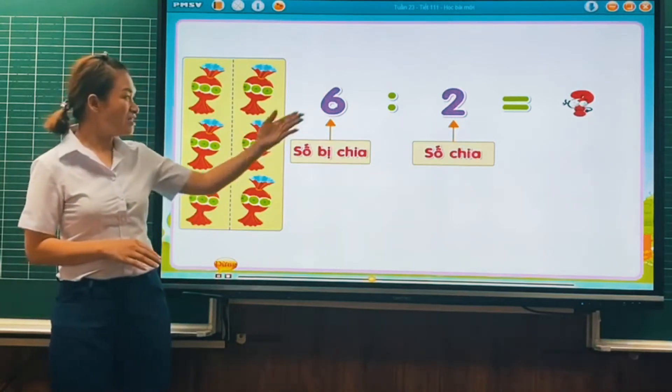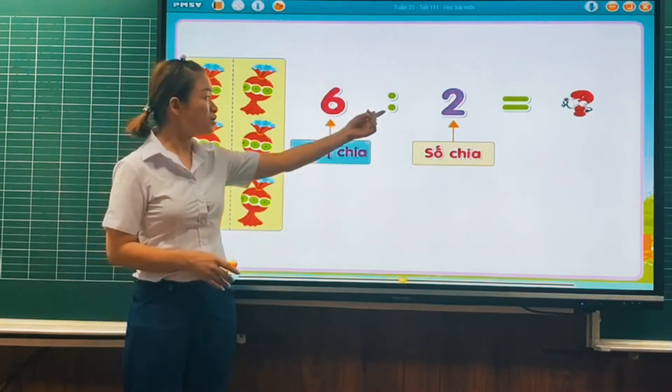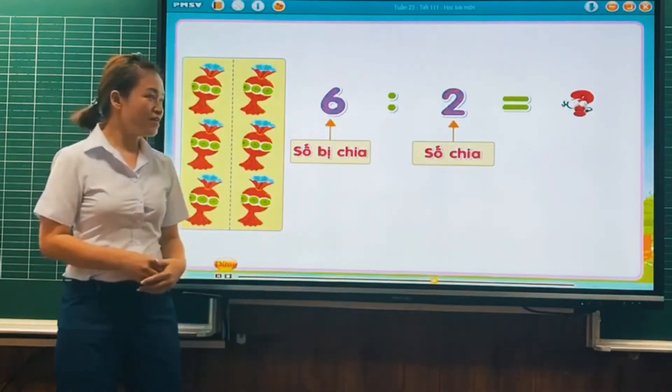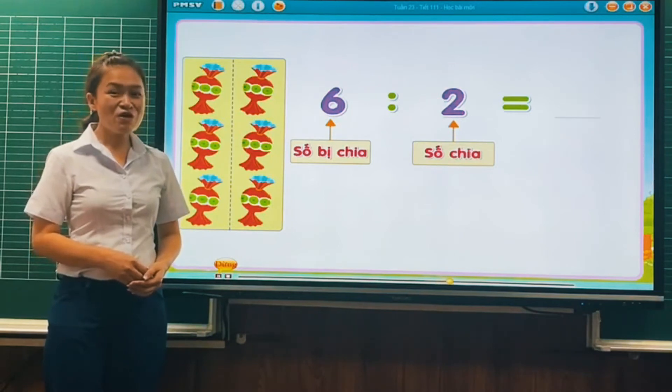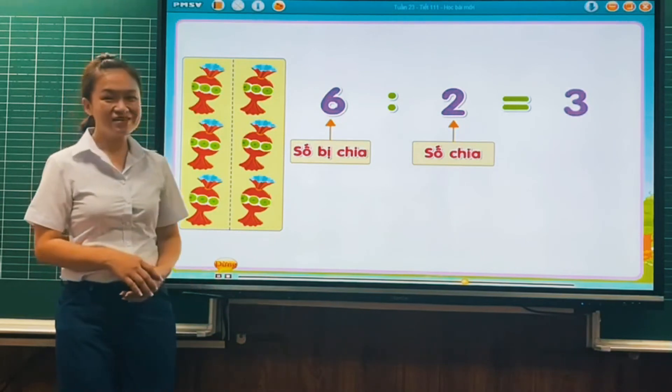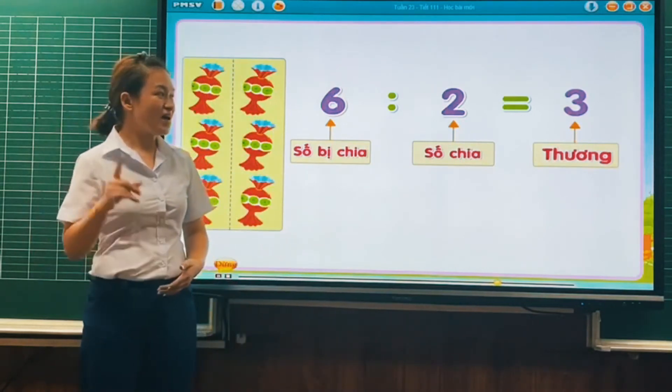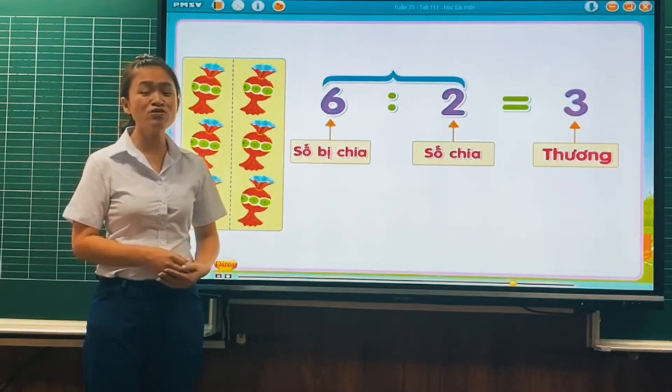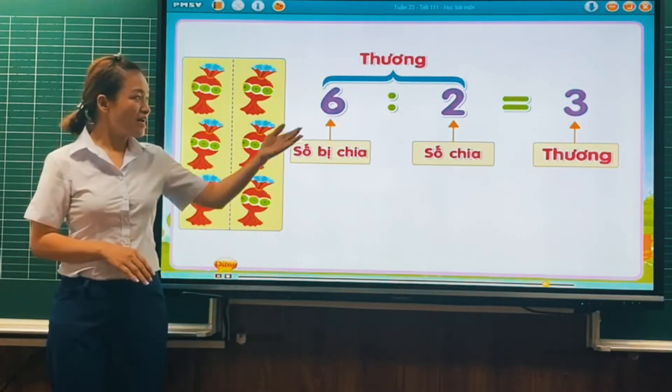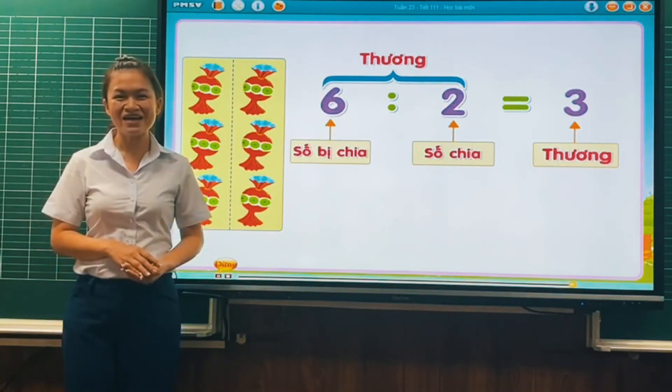What is this result called? The result of this calculation is called thương. Note that the result of 6 chia 2 is also called thương. Do you see, is it easy? Let's remember the component names of this calculation so we can use them properly and practice well. Our lesson ends here.